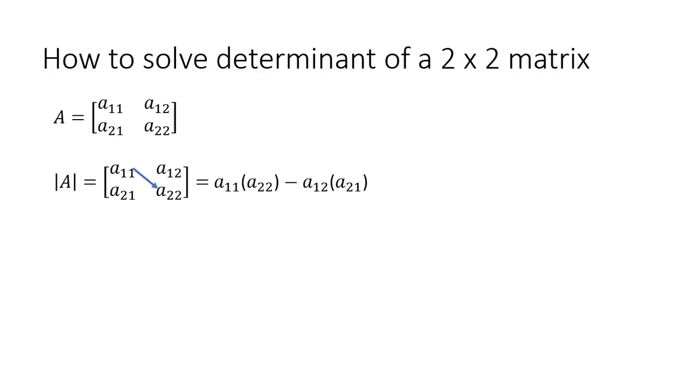We're going to multiply this first element by this element down here, and then subtract this element up here multiplied by this element down here. Think of it as a series of cross multiplications.